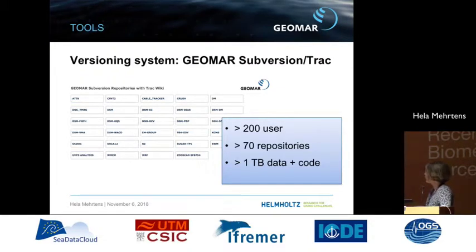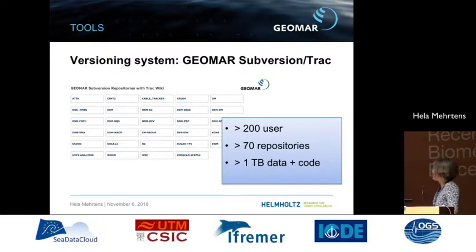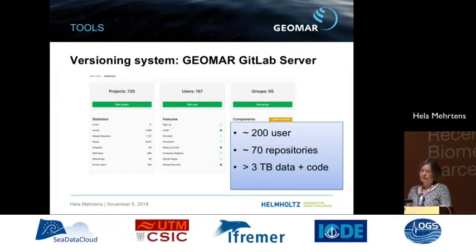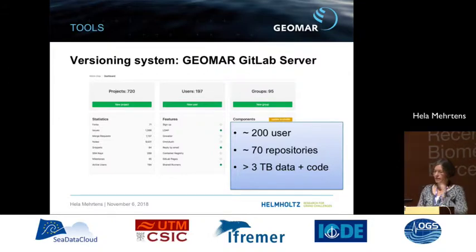During the data use phase, we offer versioning systems. We have used the Trac wiki versioning system for quite a long time, with about 200 users and 70 repositories holding roughly one terabyte of code and data. About two years ago we also installed a GitLab server, which already has about 200 users and 70 repositories. This is connected with Git LFS — a large file system — making it possible to store large data files, totaling about three terabytes of code and data.